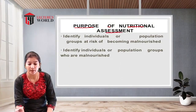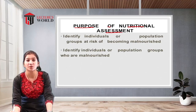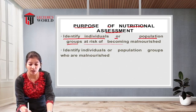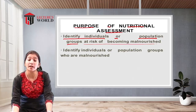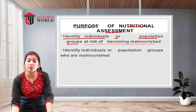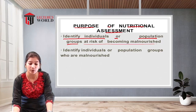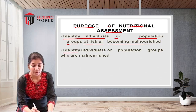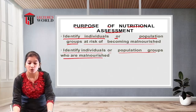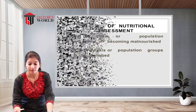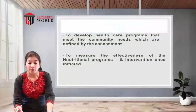The first purpose of nutritional assessment is to identify individuals or population groups at risk of becoming malnourished. By doing surveys, we can come to know about nutritional problems in the population and give knowledge to people so they are aware and can protect themselves. The second purpose is to identify individuals or populations who are already malnourished, to determine the percentage of malnutrition in the population.